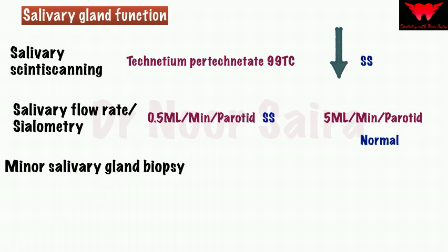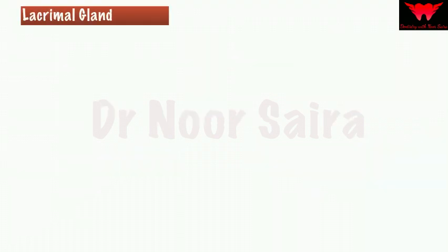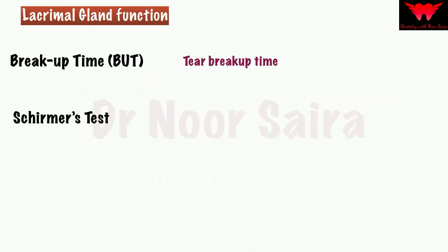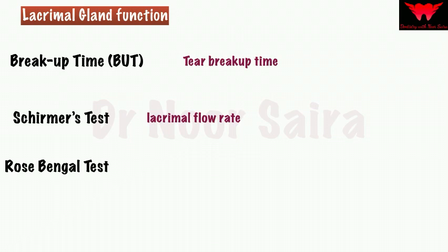Three important tests are also related to lacrimal gland function. The first is the breakup time or BUT test, used to determine tear breakup time. The second is the Schirmer's test, used to determine lacrimal flow rate. The third is the Rose Bengal test, which gives a pink stain in cases of keratoconjunctivitis.